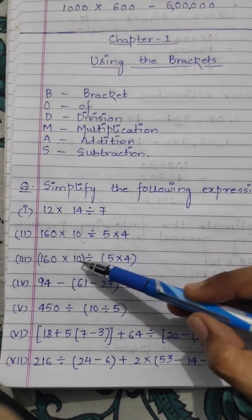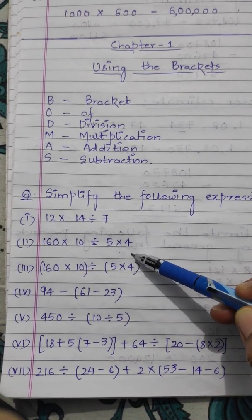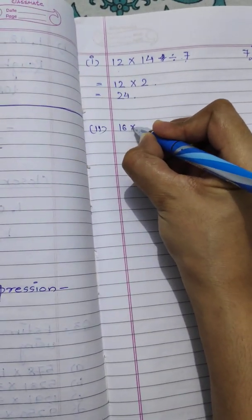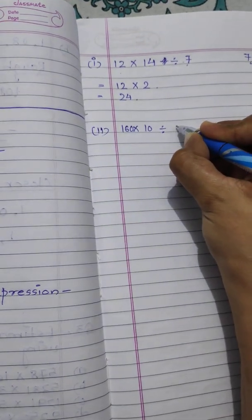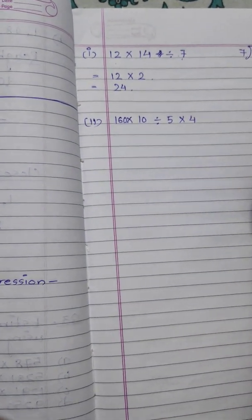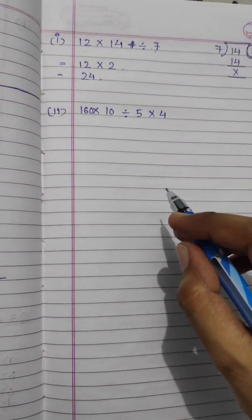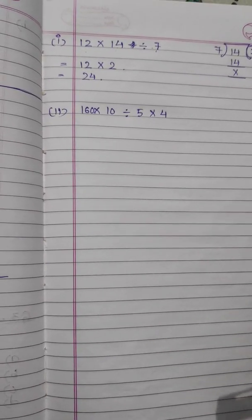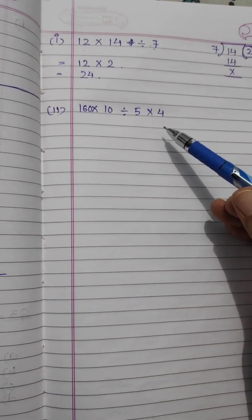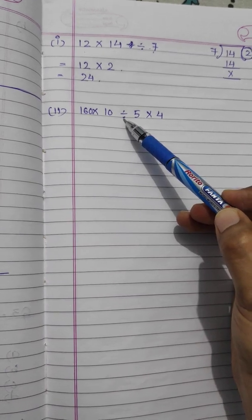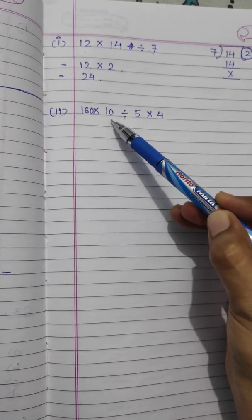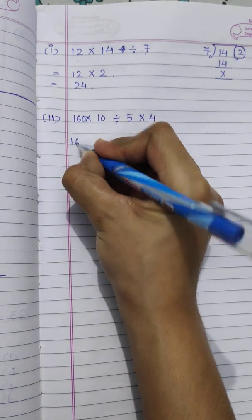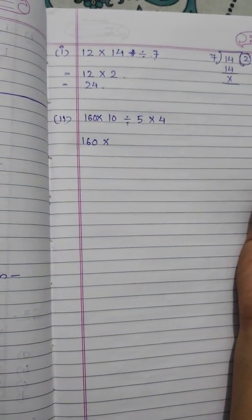The second part is 160 × 10 ÷ 5 × 4. Again, more than one operation is given, so we use the BODMAS rule. There is no bracket, so we go to division. The division sign is between 10 and 5, so we divide those two numbers first, copying the rest of the expression.